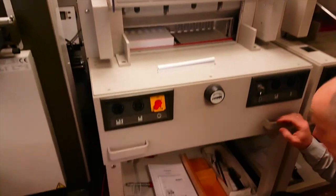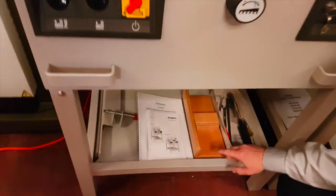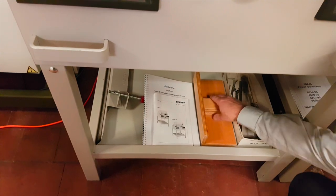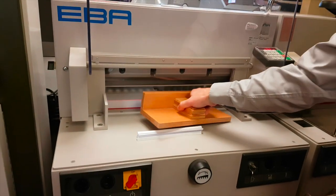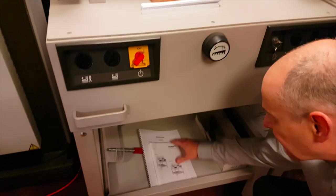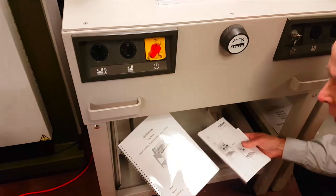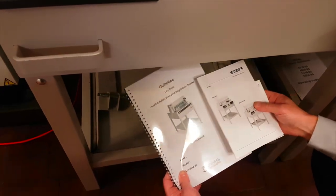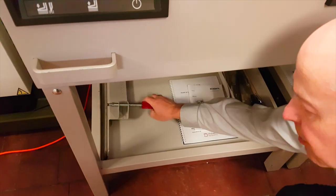With this particular guillotine, we have all the tools in a handy little storage shelf: a knock-up block for knocking the paper up, the manual, the guillotine log book for health and safety purposes, and also the blade change tool.